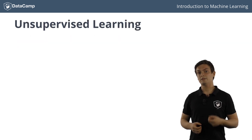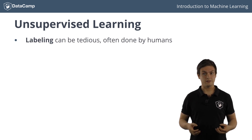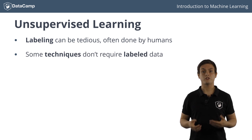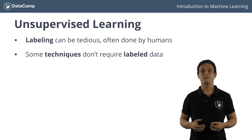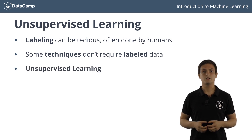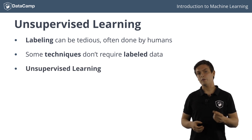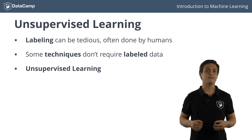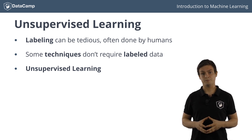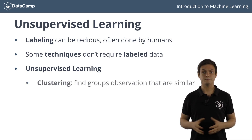Labeling can be a tedious work and it is often done by humans. There are other techniques which don't require labeled observations. These techniques are called unsupervised learning. You've already acquainted yourself with one of these techniques in a previous video, namely clustering.